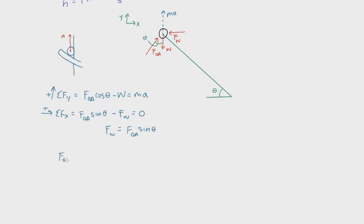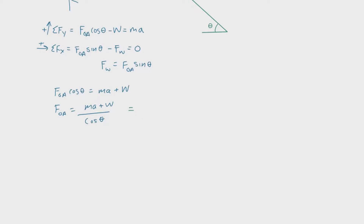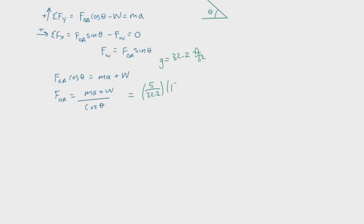Our goal is to find FOA. From the Y-direction equation: FOA cosine theta equals MA plus W, so FOA equals (MA plus W) divided by cosine theta. Plugging in values — using US customary units with gravity 32.2 ft/s², mass equals 5 divided by 32.2 slugs, acceleration equals 17.159 ft/s², weight equals 5 pounds, and theta equals 40 degrees — FOA equals 10.005 pounds.